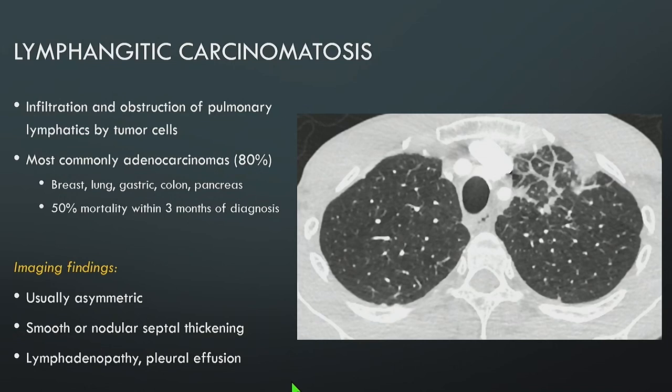A quick note on lymphangitic carcinomatosis: this is infiltration and obstruction of pulmonary lymphatics by tumor cells, most commonly seen with adenocarcinomas — breast cancer, lung cancer, gastric, colonic, and pancreatic cancer. There is very high mortality — 50% within three months of diagnosis — so this rapidly progresses. Imaging shows usually asymmetric smooth or nodular septal thickening, and often lymphadenopathy or an ipsilateral pleural effusion, though not always.